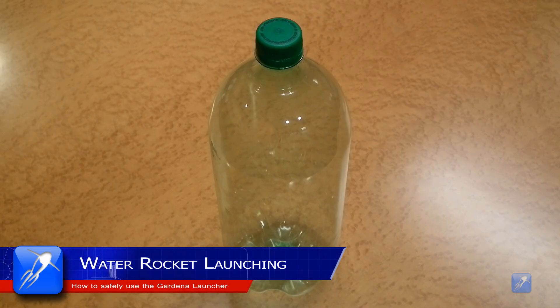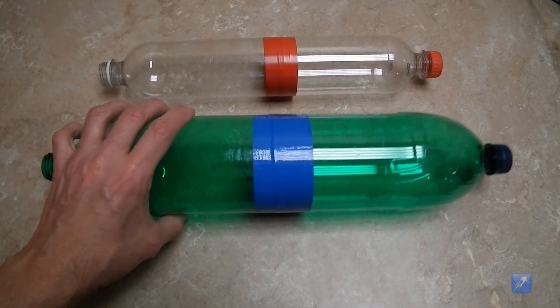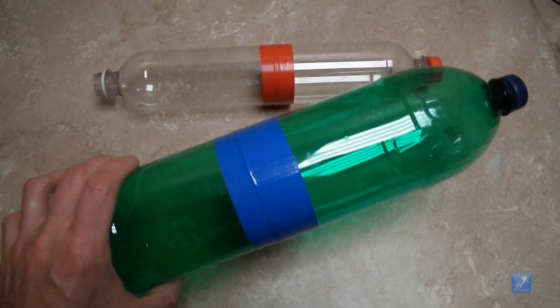You can launch just about any empty soft drink bottle by attaching a Gardner-style nozzle to it, or you can build a much more complex water rocket, which will fly much higher and go much straighter.